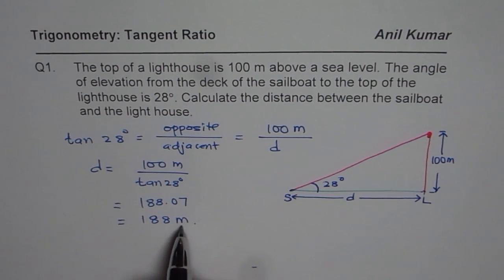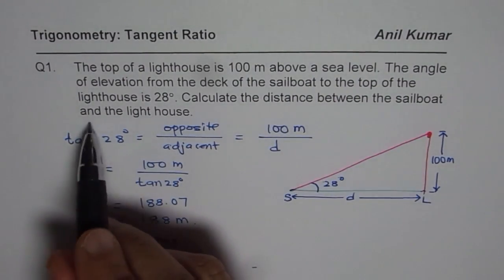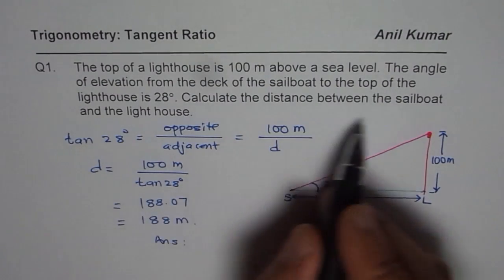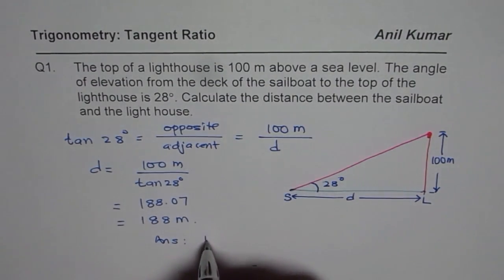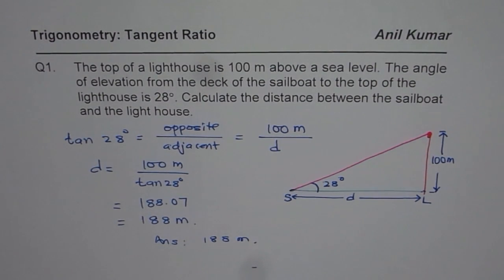So you get 188 meters as the answer. So the answer is that the distance between the sailboat and the lighthouse, you should write everything, is 188 meters. That is how you should be solving it. I hope you understand. Thank you and all the best.